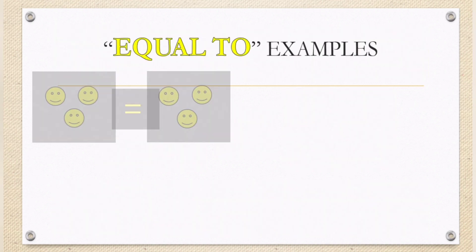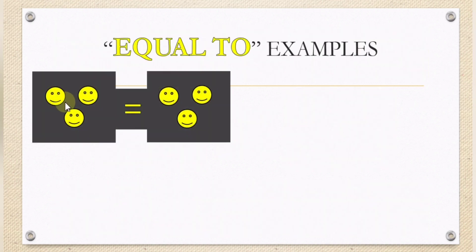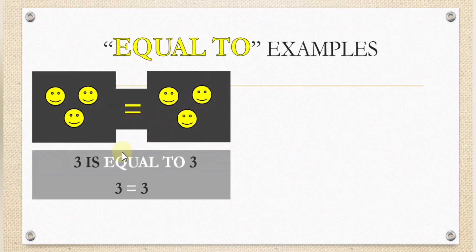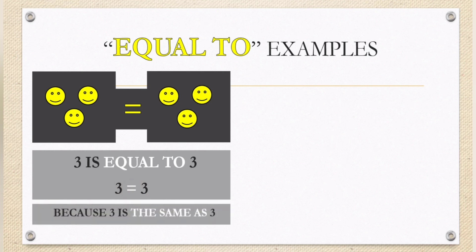Equal to examples. How many smiley faces? First box: one, two, three. Second box: one, two, three. Three is equal to three. Or it can be written as three equals three. Because there are three smiley faces in the first box and another three in the second box — they are the same.